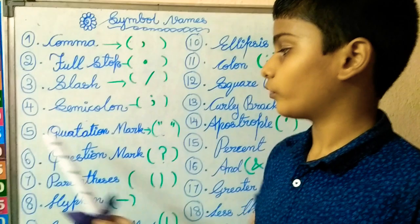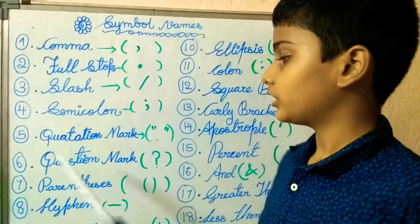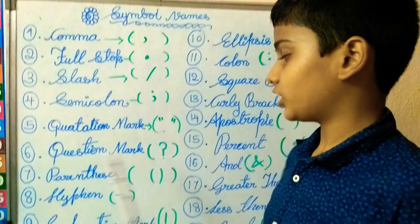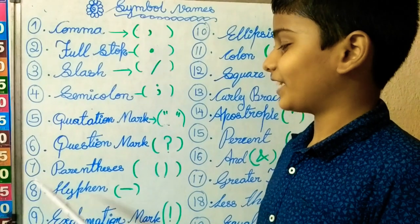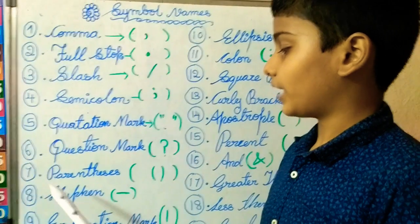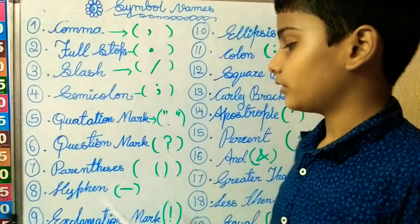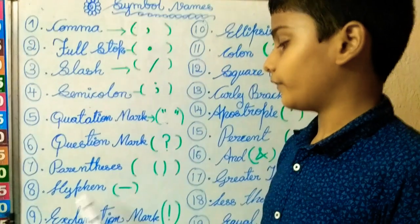Fifth one: quotation mark. Sixth one: question mark. Seventh one: parenthesis. Eighth one: hyphen.